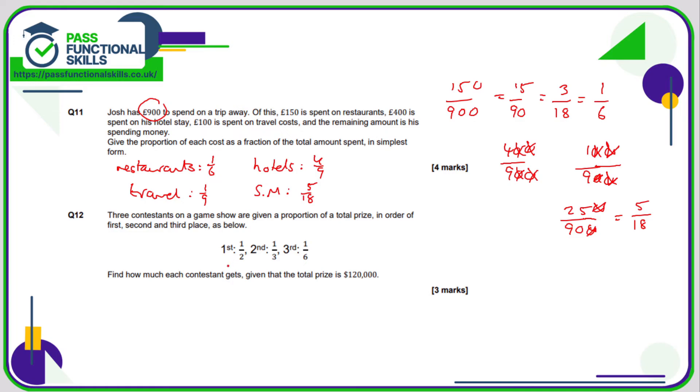Question number 12 is also a calculator question. There are three contestants and they are given a proportion of a total prize.